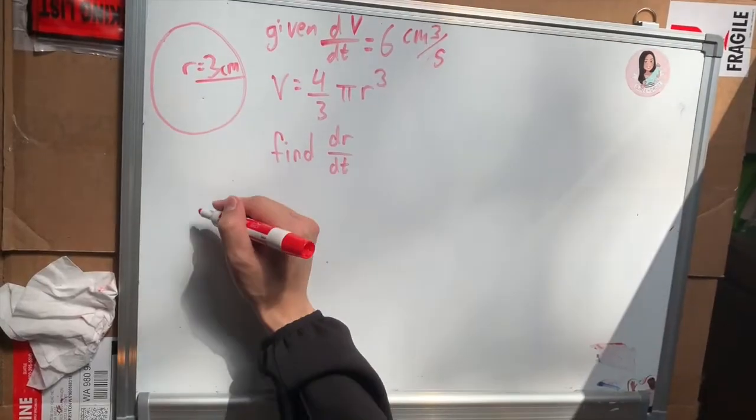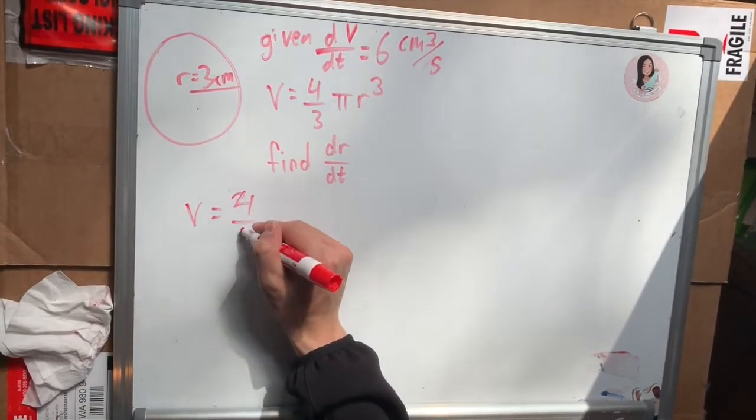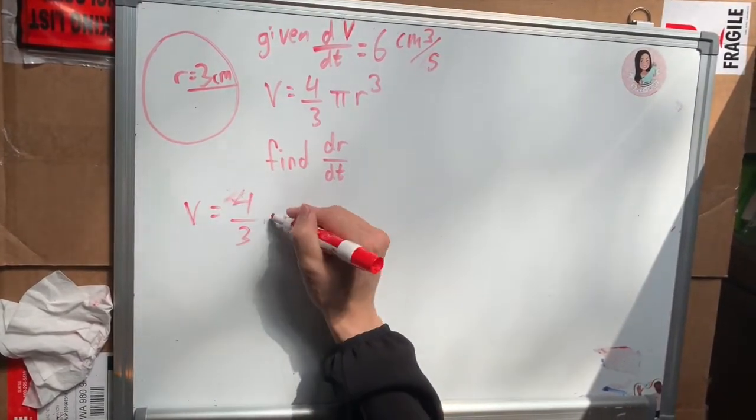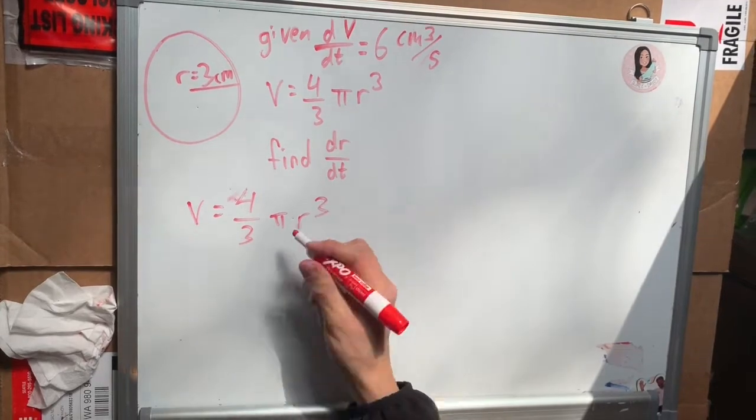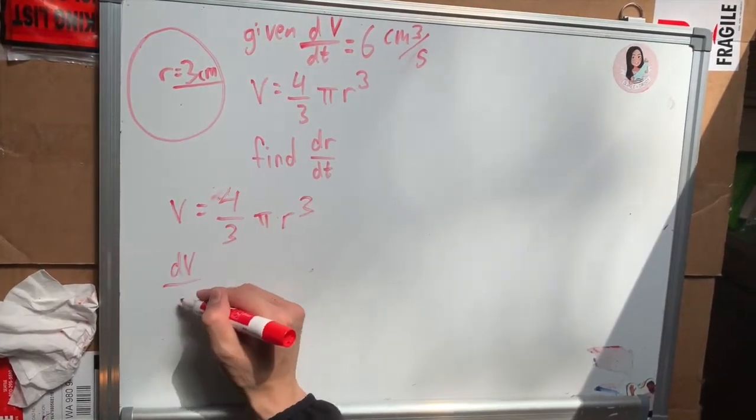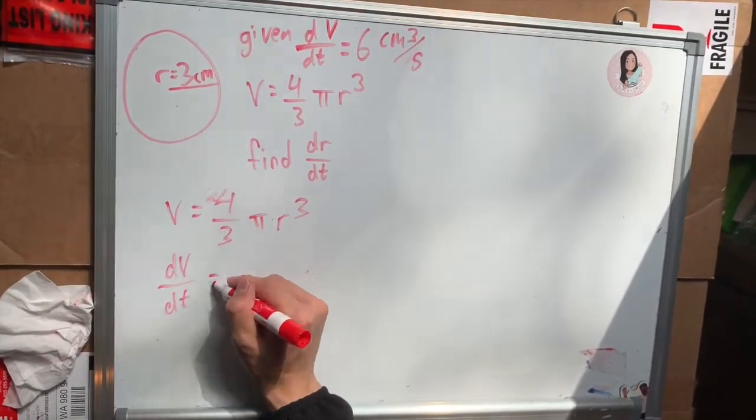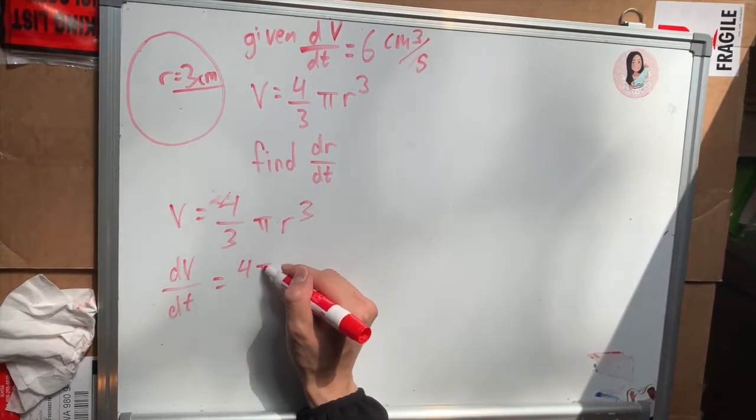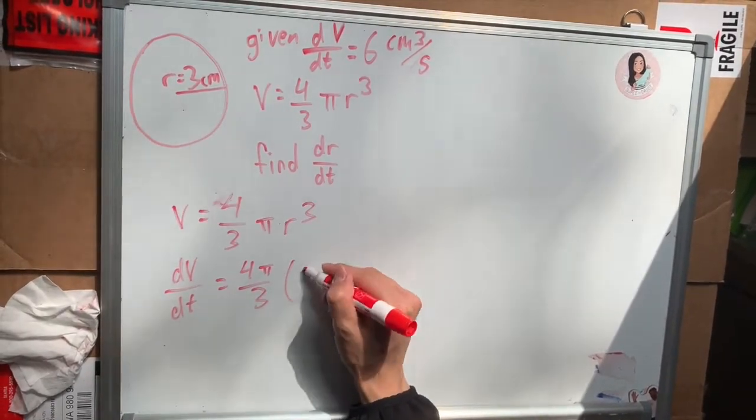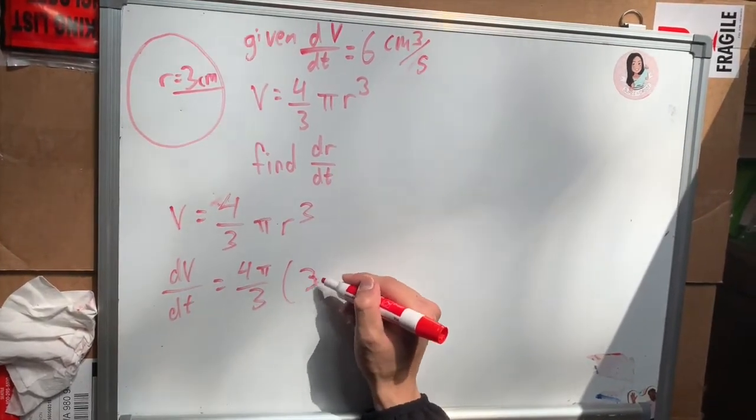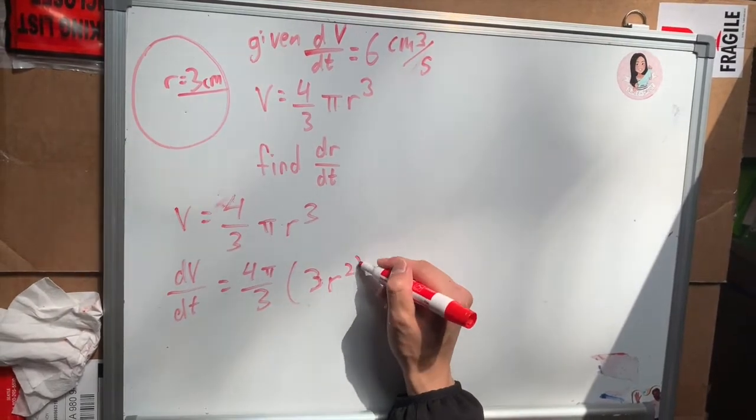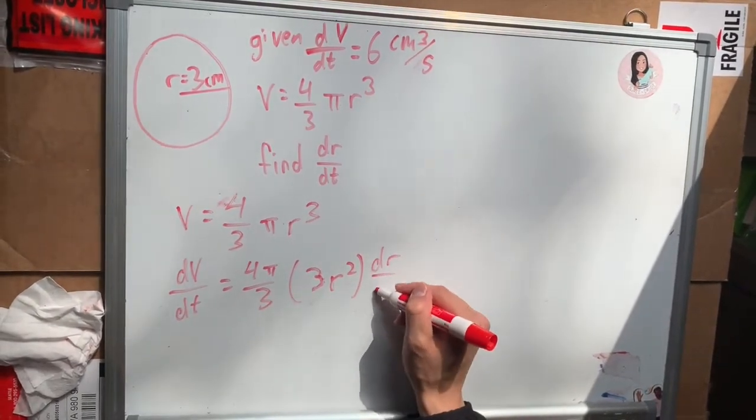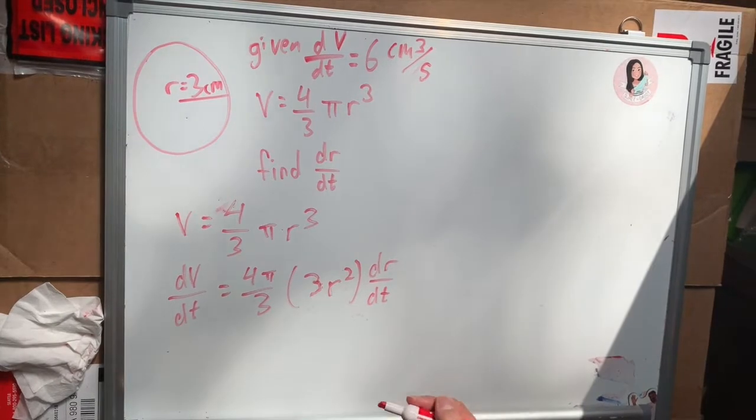We are given a radius of 3 sphere, and we know that the volume is (4/3)πr³. And we are also given that dV/dt is 6 centimeters cubed per second. So deriving the volume, we get (4π/3) times 3r squared times dr/dt equals the change in volume over change in time.